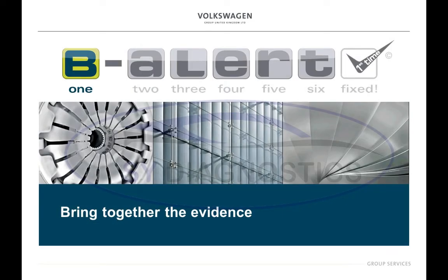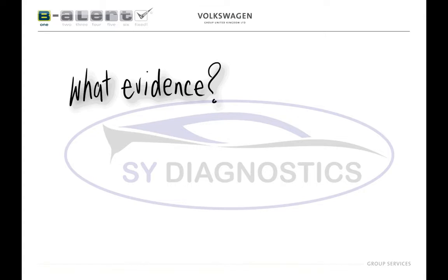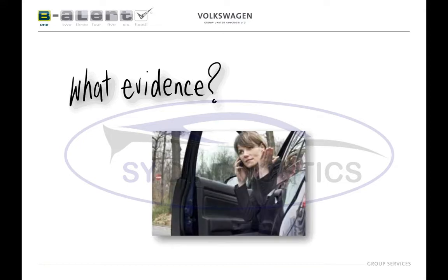In this short video I'm going to take you through some tips on bringing together the evidence — the first step of the B-ALERT process. The first question that often comes up is: what evidence? At this point you have to remind yourself that the customer has taken time out of their day to come to your service department because they're convinced they've got a problem, and this can only be based on the fact that they've experienced some sort of symptoms. If you look up symptoms in a dictionary it describes them as a sign or indication of something acting as evidence.